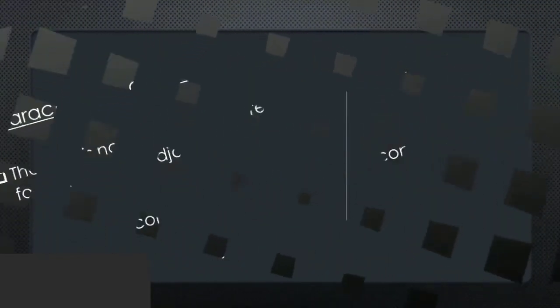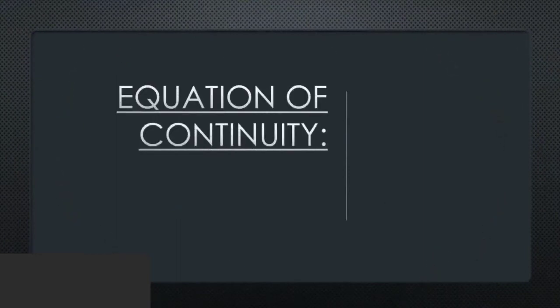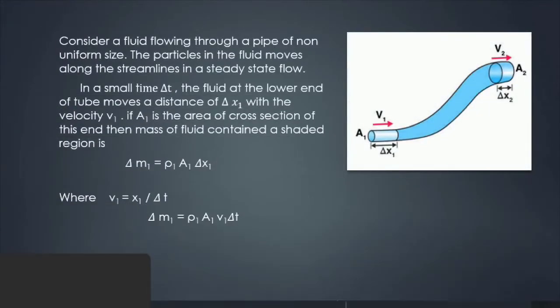Equation of continuity. Consider fluid in a tube that moves a distance Δx₁ with velocity v₁. If A₁ is the area of cross-section of this end, then the mass of fluid contained in the shaded region is Δm₁ = ρ₁A₁Δx₁.